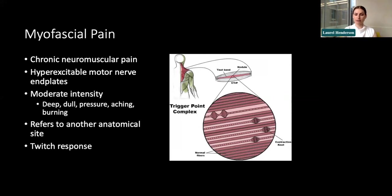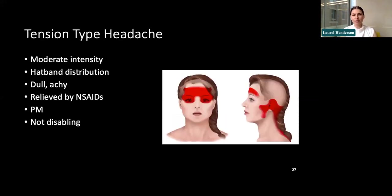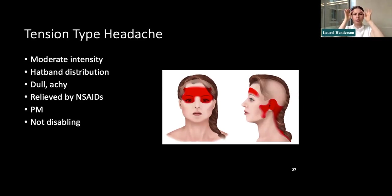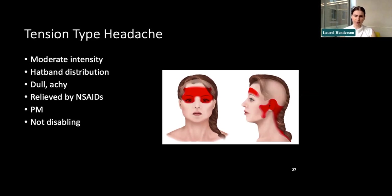Patients who overuse masticatory muscles may also develop tension-type headaches, distributed in a band pattern over the temporalis muscles, across the forehead, down the neck and cheeks. These are typically moderate intensity, dull and achy, bilateral, and relieved by NSAIDs. Patients can continue daily activities during these headaches, though pain tends to worsen as the day progresses with increased muscle activation.